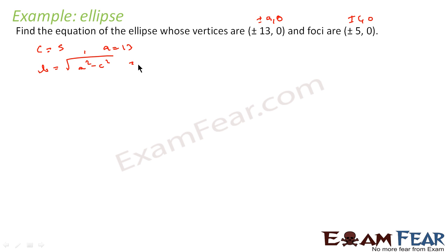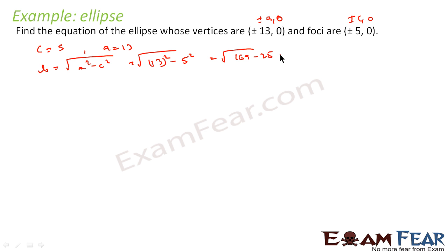That is the square root of 13² minus 5², which equals the square root of 169 minus 25, which is the square root of 144, and that is 12. So b is equal to 12.